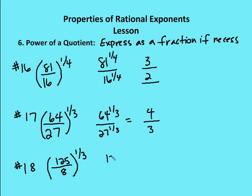Last problem: 125 over 8, all to the 1 third. Using power of a quotient, the cubed root of 125 is 5, since 5 times 5 times 5 equals 125. The cubed root of 8 is 2, since 2 times 2 times 2 equals 8. So the answer is 5 over 2.